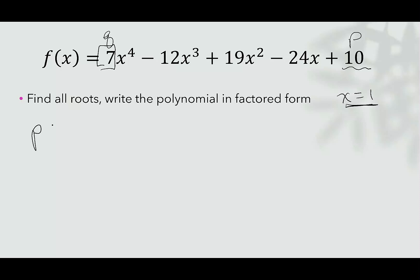We're going to list all possible ratios we can form with factors of p and factors of q. Let's write that down. So p, the number 10, has factors of ±1, ±2, ±5, ±10.